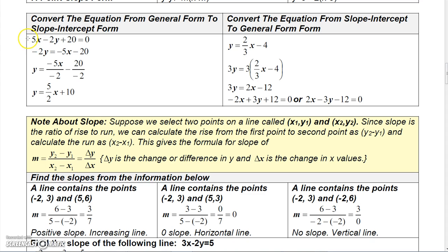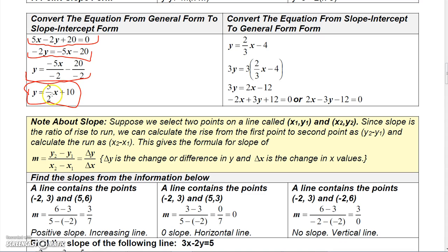There are times when you'll want to convert from one form to another. Starting from general form, to convert to slope-intercept form just solve for y. I'll subtract 5x and 20 from both sides to get negative 2y equals negative 5x minus 20, then divide all three terms by negative 2, and I get y equals positive five-halves x plus 10. That's the slope-intercept form.